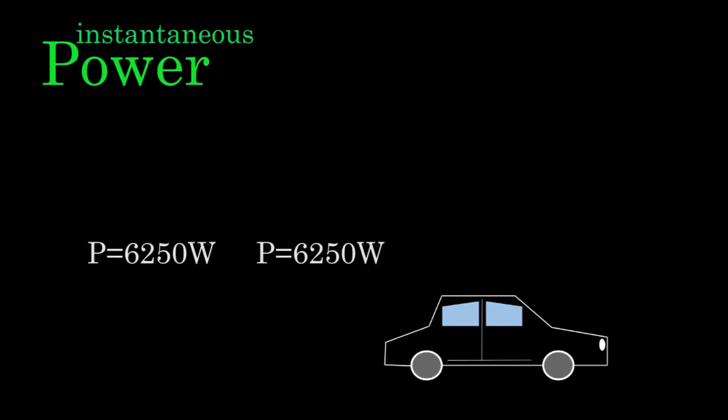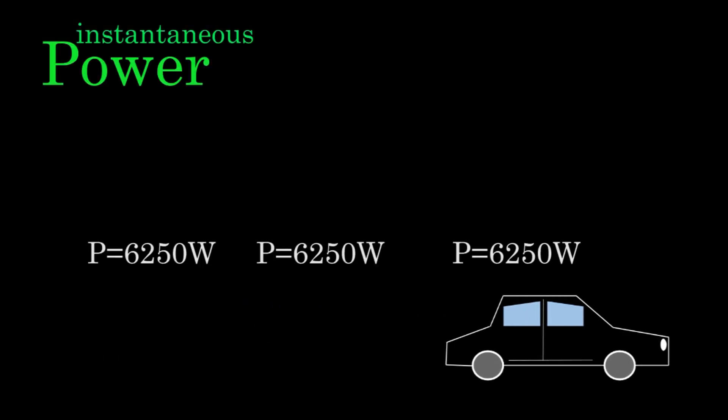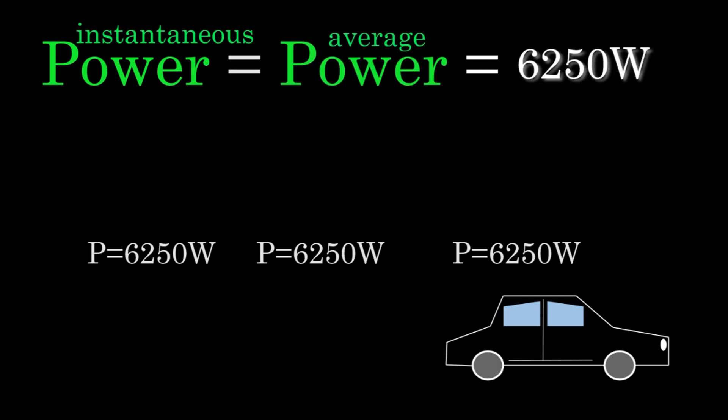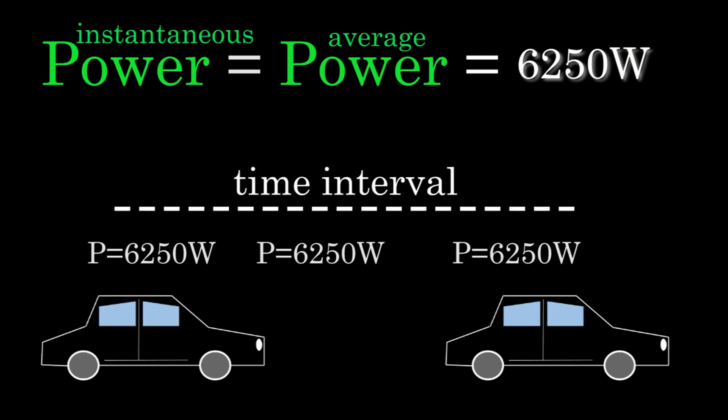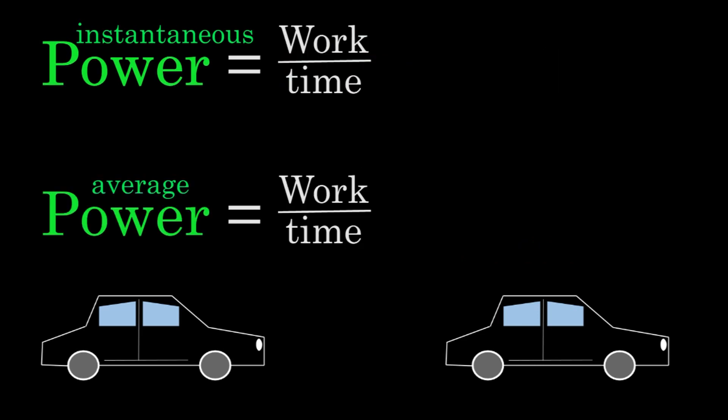For instance, let's say you were looking at a car whose instantaneous power output was 6,250 watts at every given moment. Since the instantaneous power never changes, the average power just equals the instantaneous power, which equals 6,250 watts. In other words, the average power over any time interval is going to equal the instantaneous power at any moment. And that means work per time gives you both the average power and the instantaneous power in this case.